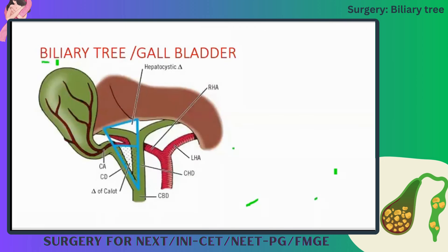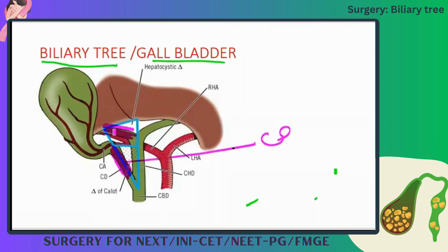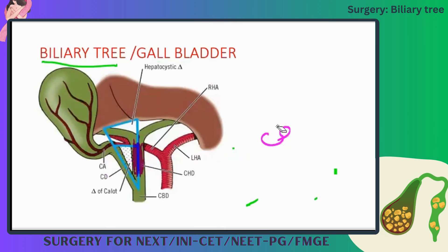Now moving to the last topic — the biliary tree and the gallbladder. When discussing Palo-Pasaro's triangle, we now look at Calot's triangle. Here is the gallbladder, this is the cystic duct, and this is the common bile duct and common hepatic duct.